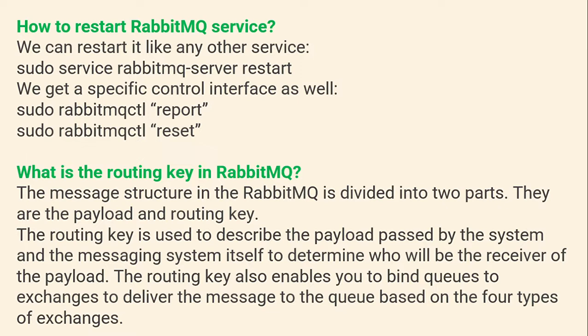What is the routing key in RabbitMQ? The message structure in RabbitMQ is divided into two parts: payload and routing key. The routing key is used to describe the payload passed by the system and the messaging itself, to determine who will be the receiver of the payload. The routing key also enables you to bind queues to the exchange to deliver the message based on the type of exchange.